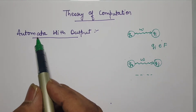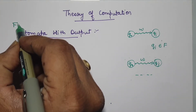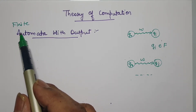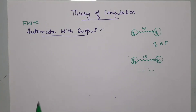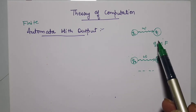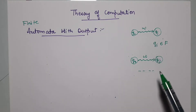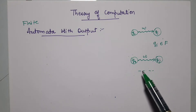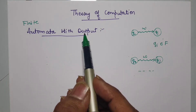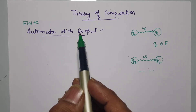Let us get into the detail of this finite automata with output, because it also has a finite number of states. There are two types of automata: first is automata without output, that we have seen in the previous videos, and automata with output, that we are going to see in this video and some videos coming ahead. Basically there are two types of finite automata that can give you output.